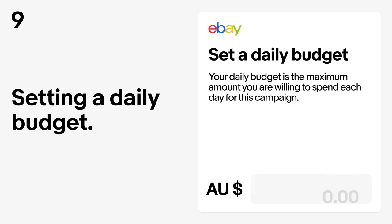Next, set your daily budget. This is the maximum amount you're willing to spend per day on a single campaign — you'll never be charged more than the amount you selected. Once your campaign has reached your daily budget, your ads will stop showing until the next day. Any unused daily budget will not roll over to the next day.